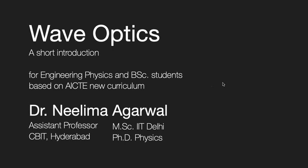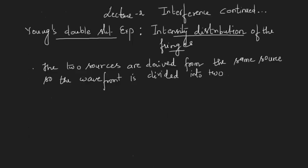Let us continue our short course on wave optics. In the last lecture I gave a brief introduction of interference and we saw how wave optics came into picture. Young demonstrated that the fringes obtained on the screen were due to interference of light. Now let us try to study in detail the intensity distribution of the fringes.